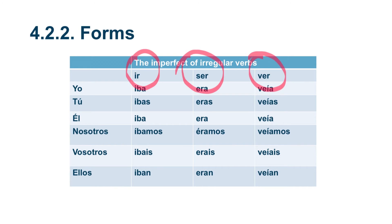The verb ir does not even keep the stem in the imperfect. For ir: yo iba, tú ibas, él iba, nosotros íbamos, vosotros ibais, ellos iban.